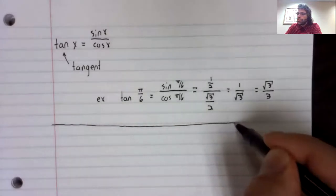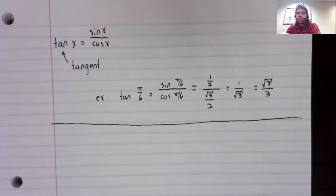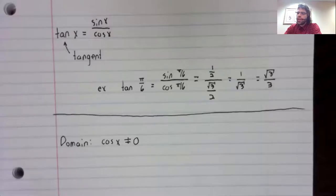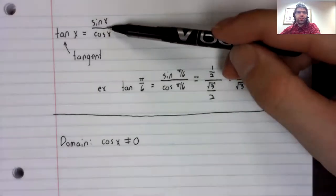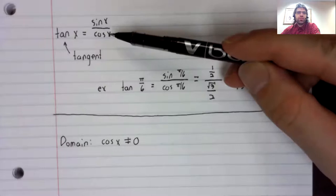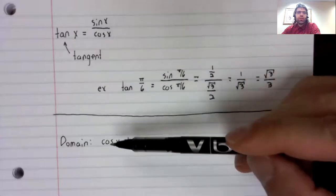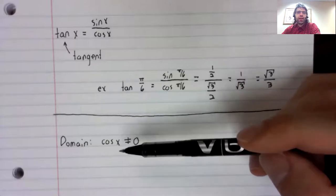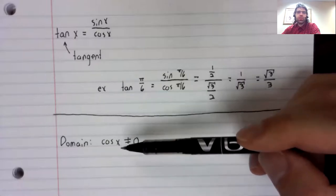Let's make a few observations about the tangent. In particular, its domain and range. The tangent has this division. We can't divide by zero. So, the domain is all of the numbers where the cosine is not zero.